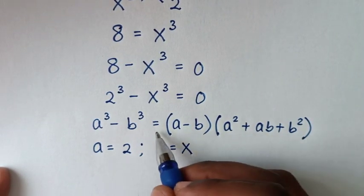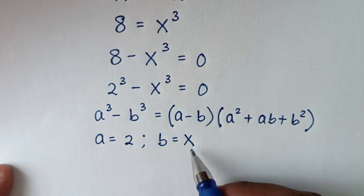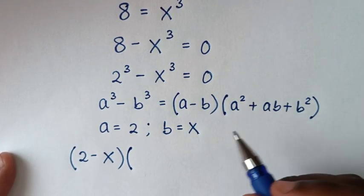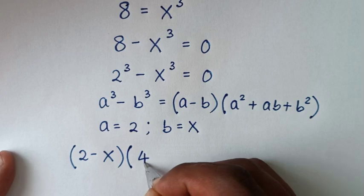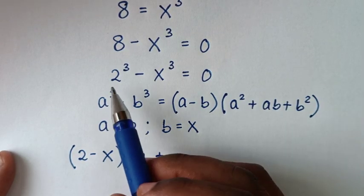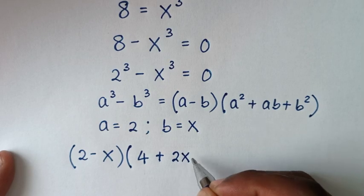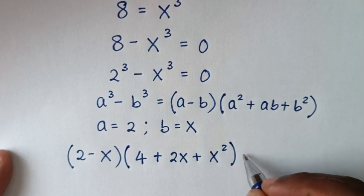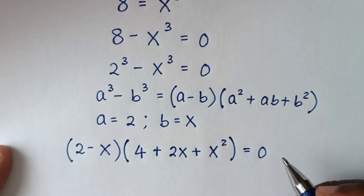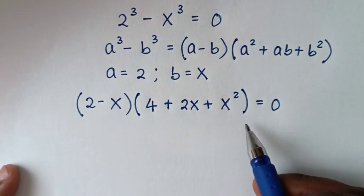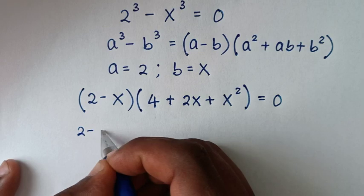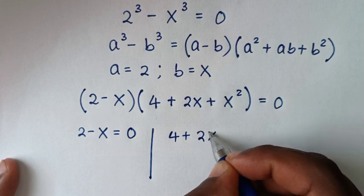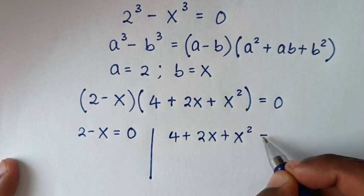Then we'll apply this form: a minus b gives 2 minus x, then the bracket contains a squared which is 2 squared, which is 4, plus a times b which is 2 times x giving 2x, plus b squared which is x squared, all equal to 0. From here we have two solutions: the first is 2 minus x equals 0, and the second is 4 plus 2x plus x squared equals 0.